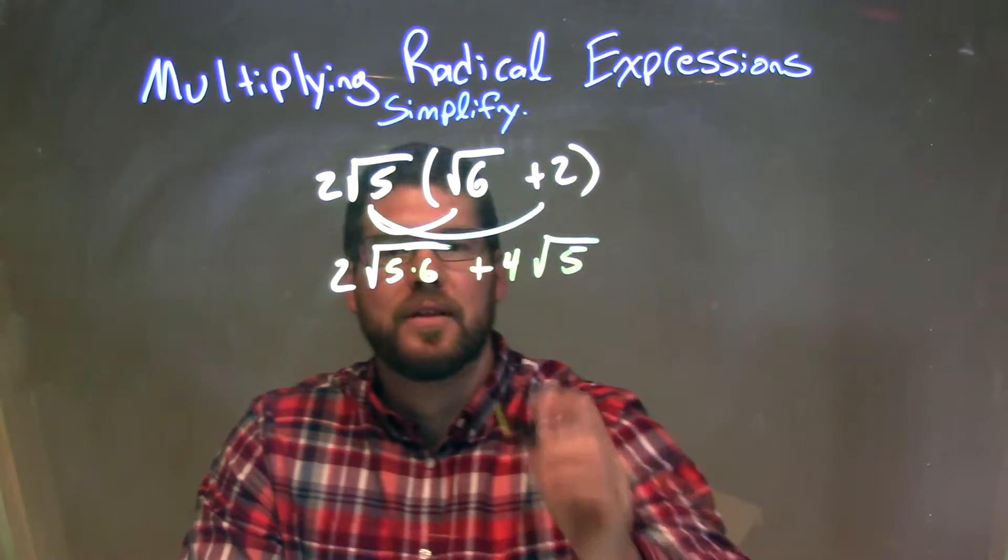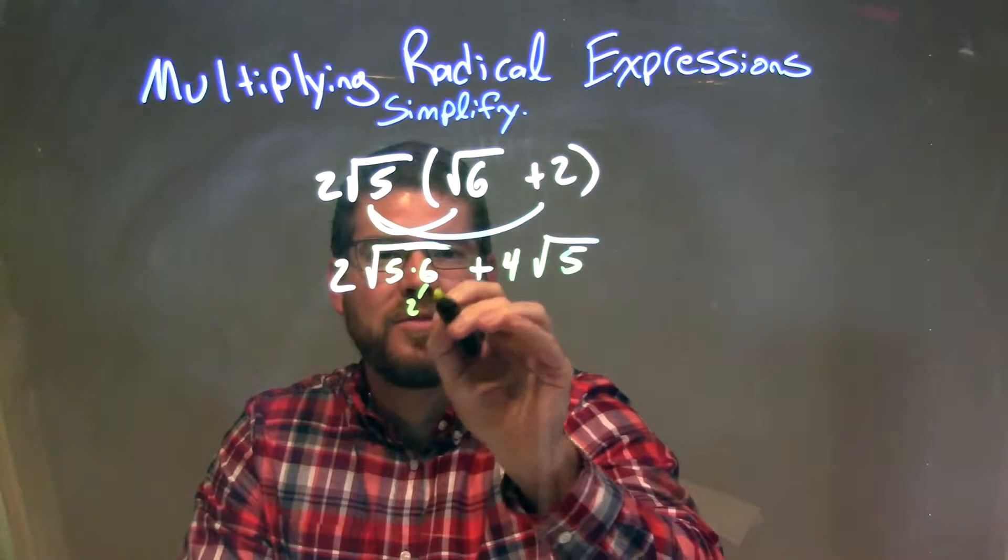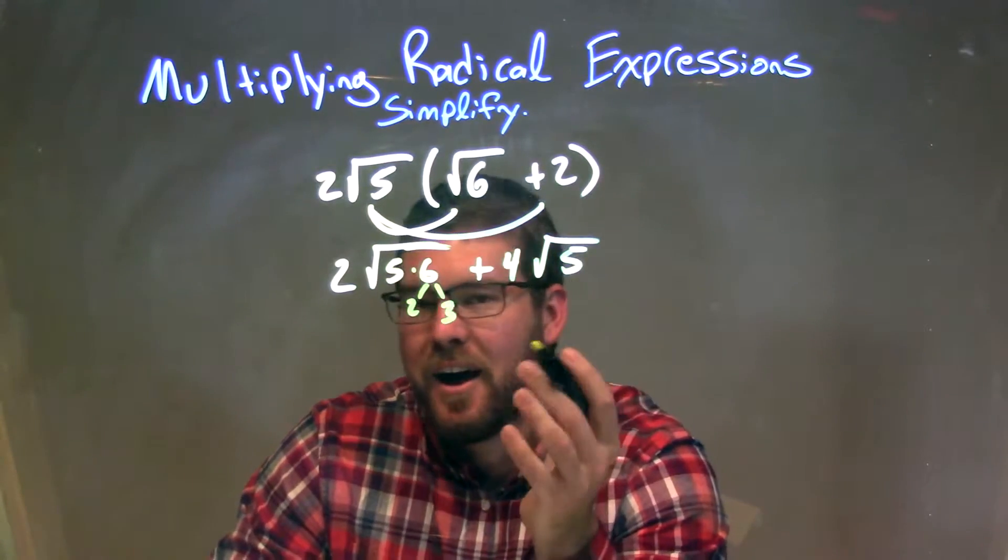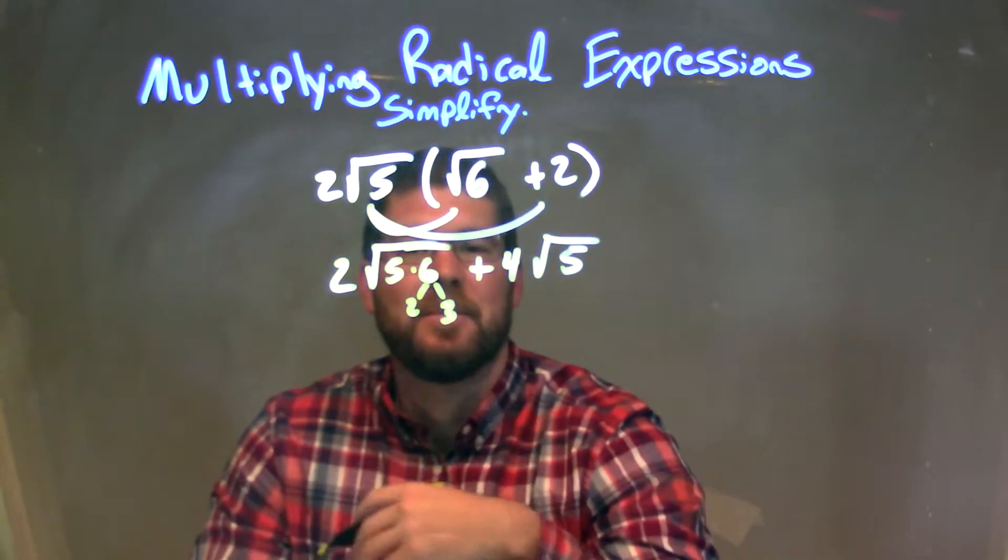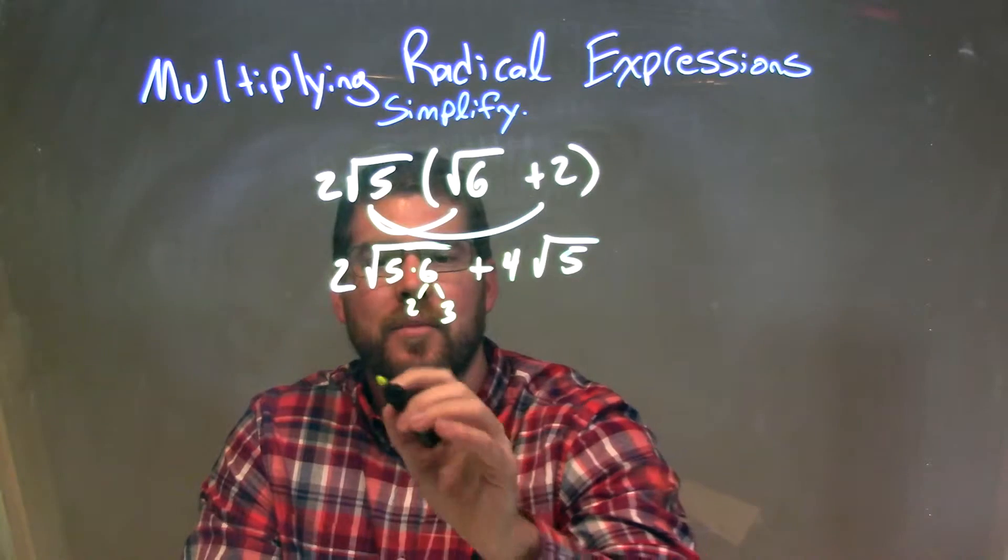So now I have to simplify it. Can I break this down? Well, 6 is just 2 times 3, right? So if 6 is 2 times 3, 5 can't break down, I have no pairs. So actually, there's no way I can break this down to bring anything out. So I'm thinking, 5 times 6 is 30, so I'm going to have to multiply those together, and then that's it. I can't simplify any more.